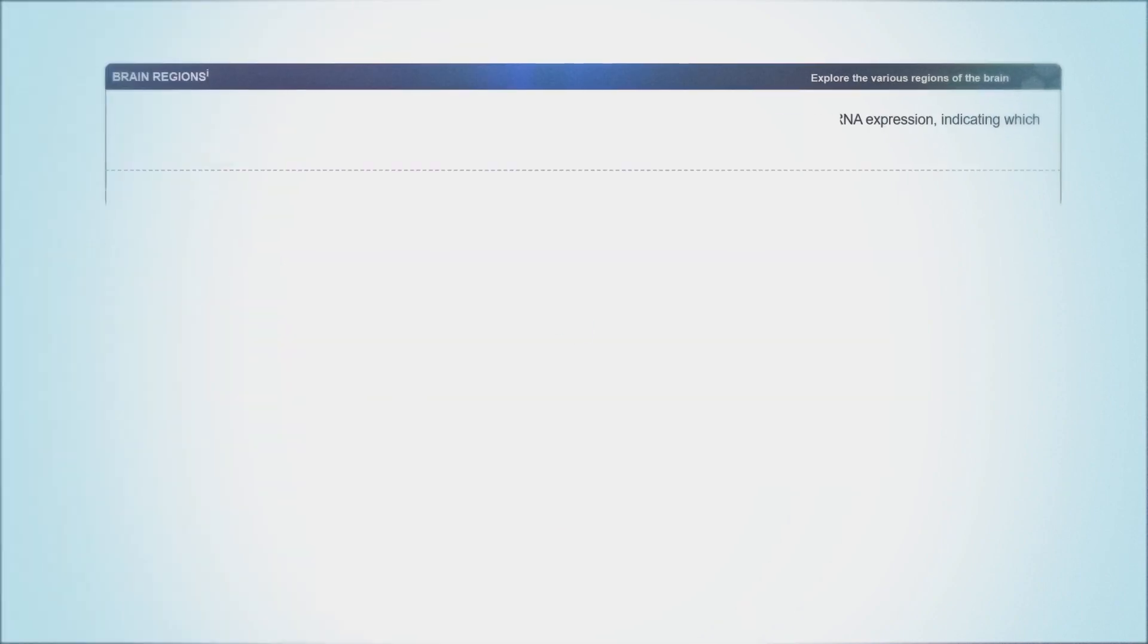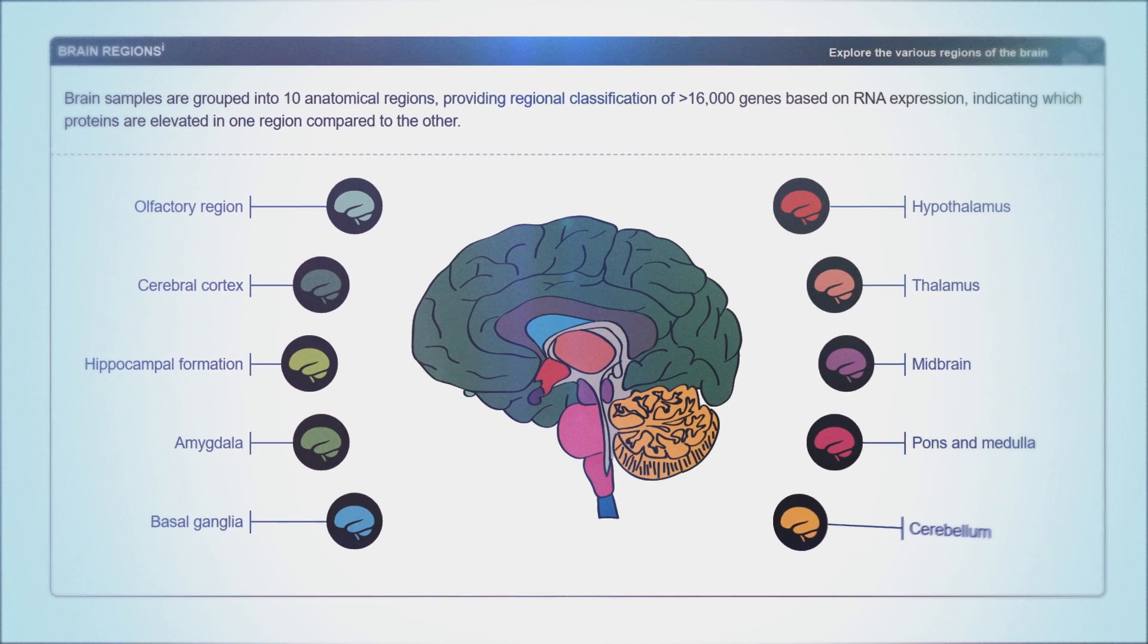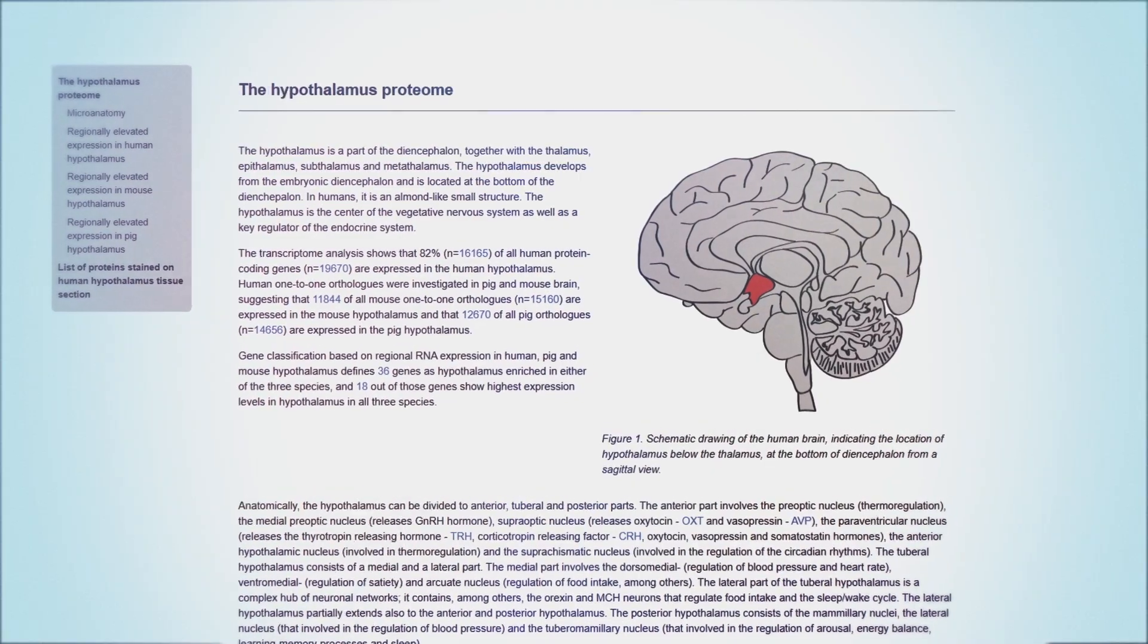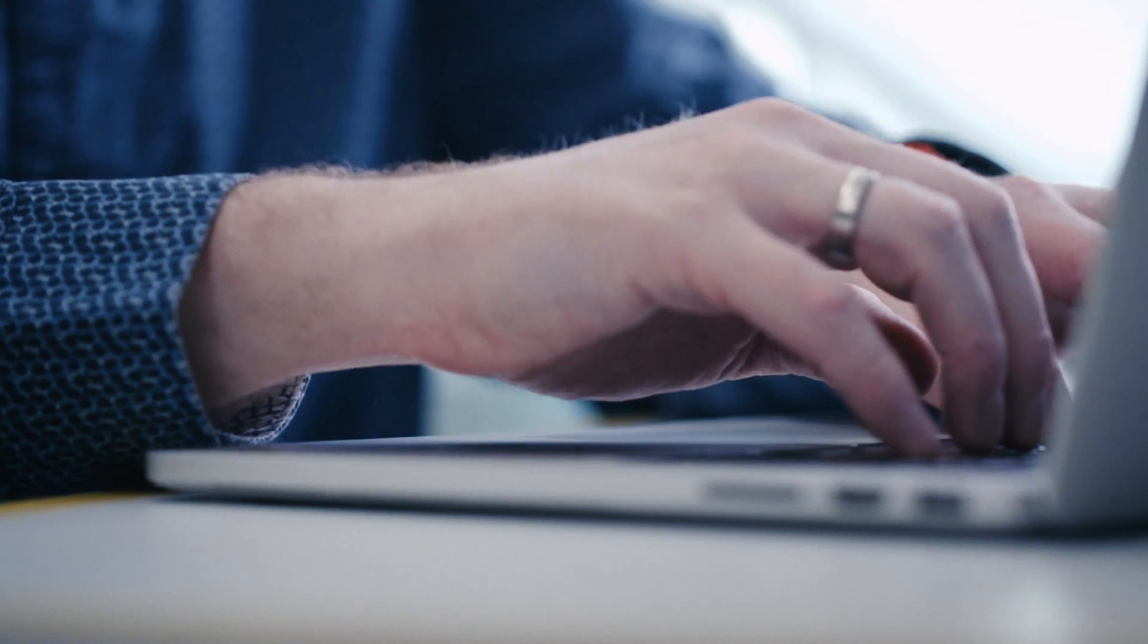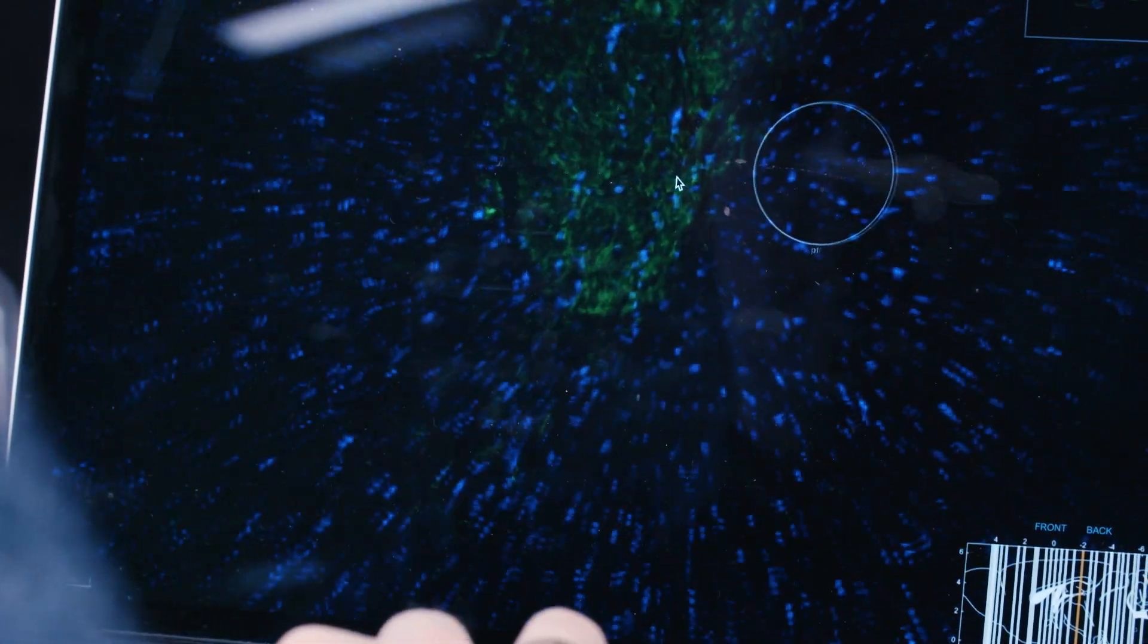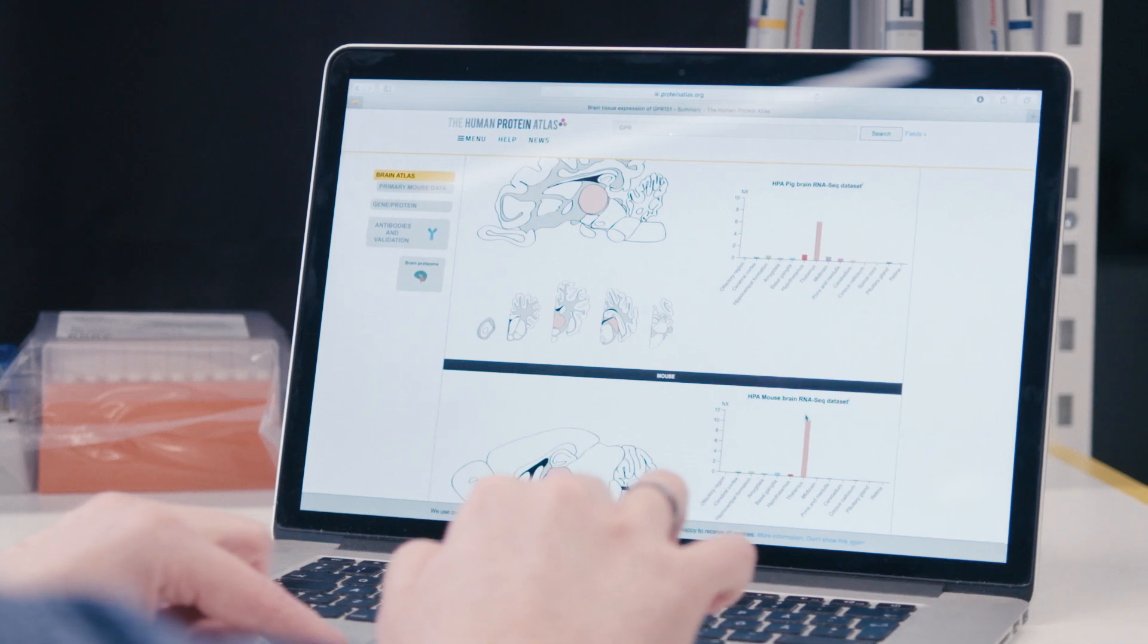The brain atlas shows the proteins localized in the different regions of the brain. A large number of regions of the brain have been analyzed and displayed not only for humans, but also for pigs and mice. This allows scientists to explore the presence or absence of a particular protein in the human brain, and also to identify differences in protein profiles between these three mammalian brains.